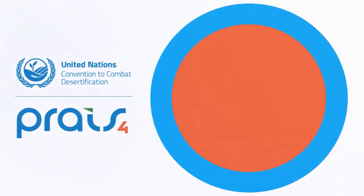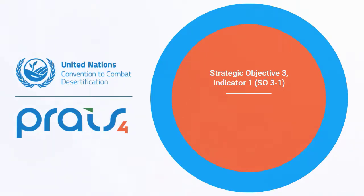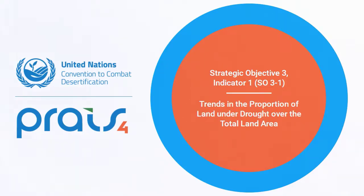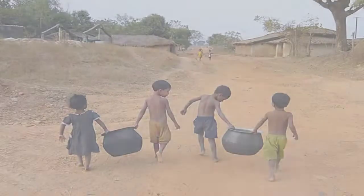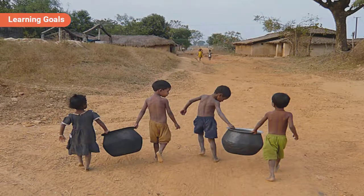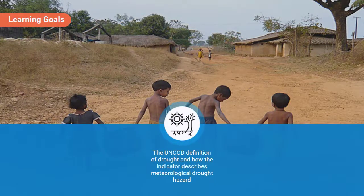Hello and welcome to the video on Strategic Objective 3 Indicator 1, or SO3.1: Trends in the proportion of land under drought over the total land area. By the end of this video you will know more about the UNCCD definition of drought and how the indicator describes meteorological drought hazard.